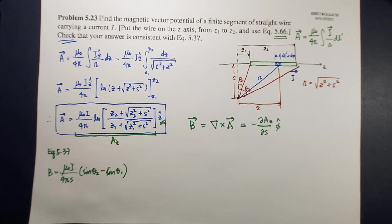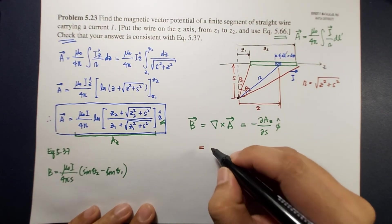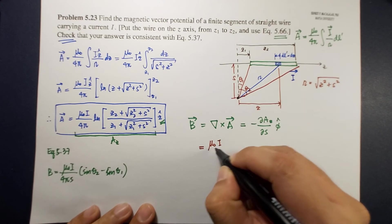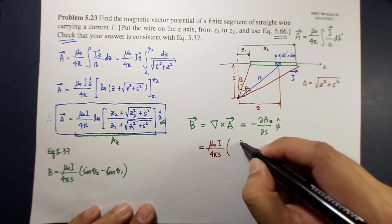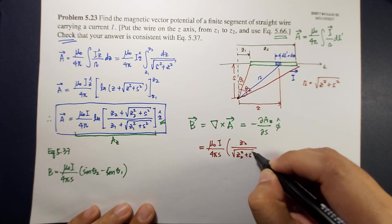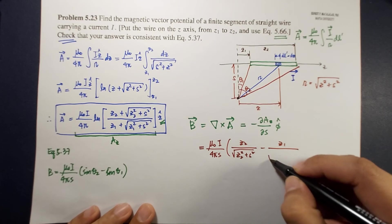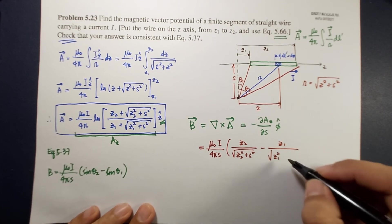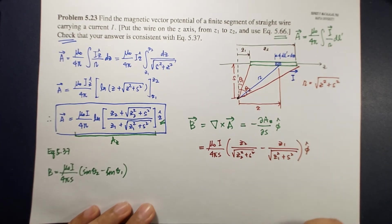So I hope you did a simple sheet work there. So as you find out that this is equal to mu naught i over 4 pi s times z2 over square root of z2 squared plus s squared minus z1 divided by square root of z1 squared plus s squared phi hat.